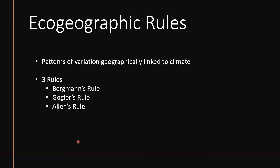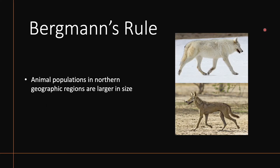Three rules we're going to look at today are Bergmann's rule, Gloger's rule, and Allen's rule. Starting with Bergmann's rule: Bergmann's rule states that animal populations in northern regions tend to be larger in size compared to populations of the same species in southern regions. Looking at a wolf example, the wolf up north is in a snowy environment versus a wolf further south, and we can see a size difference — the northern wolf is a lot thicker and more robust than the southern one.